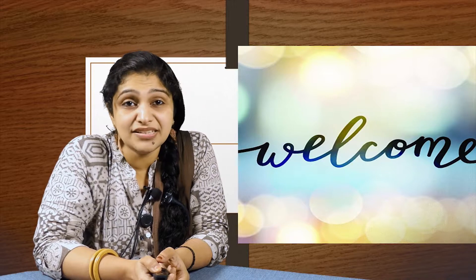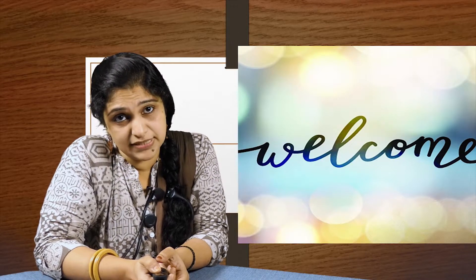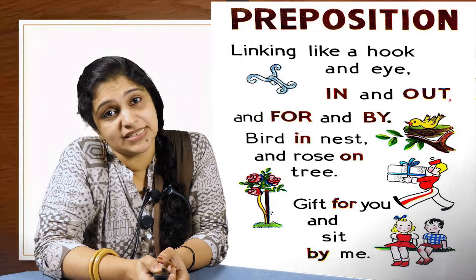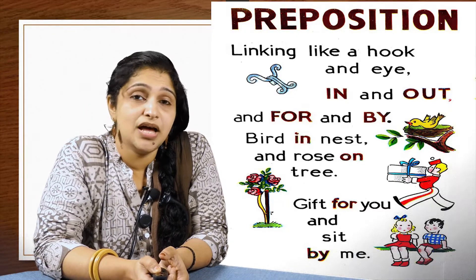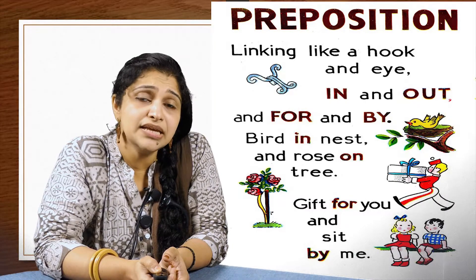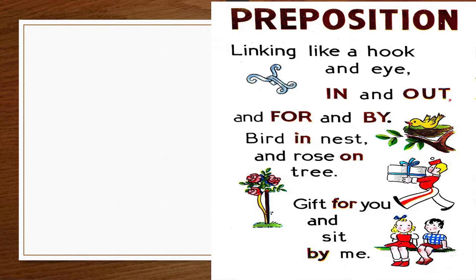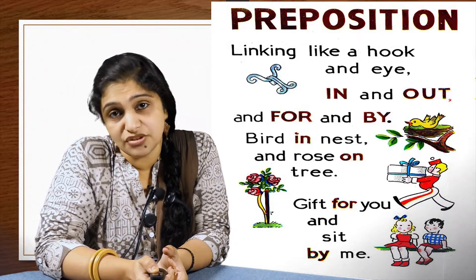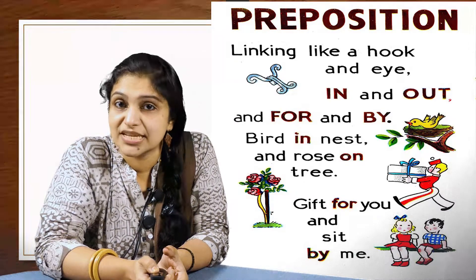The next one in series is a category of tiny particles. What are they? Prepositions. Prepositions are tiny particles that connect. Now we have a look at this example — linking like a hook: in and out, and for and by, bird in nest and rose on tree, gifts for you and sit by me. See the colored words, the red colored words. They connect. They tell you the position, location of nouns, pronouns and other objects in a sentence.